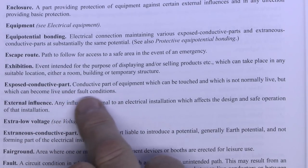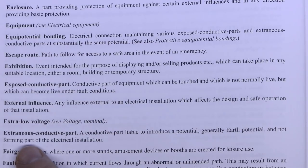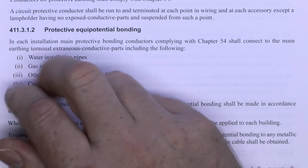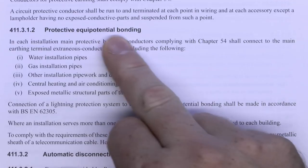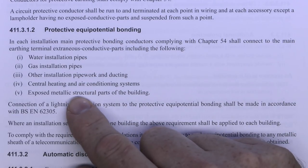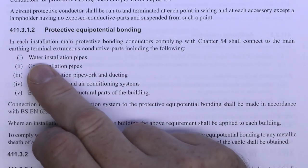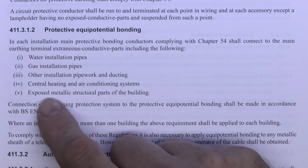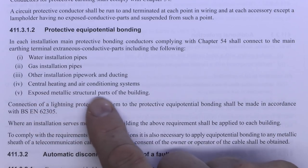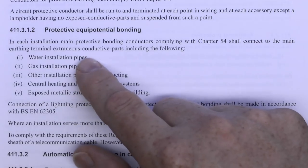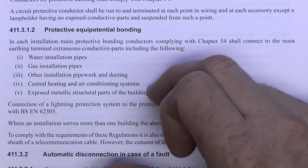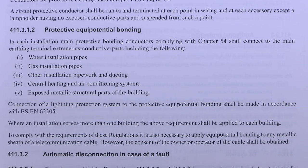It's important to note the difference between these two. The exposed conductive part is always part of the electrical installation, whereas extraneous conductive parts are not part of the electrical installation — though both are conductive. Regulation 411312 on protective equipotential bonding gives examples of the most common items considered extraneous conductive parts: water installation pipes, gas installation pipes, other installation pipework, central heating and air conditioning systems, and exposed metallic structural parts of the building. Water and gas are by far the most common.